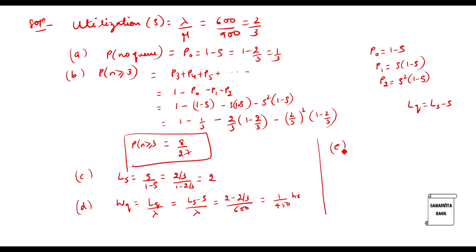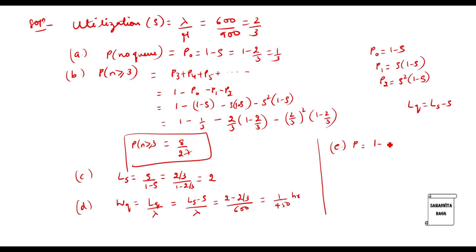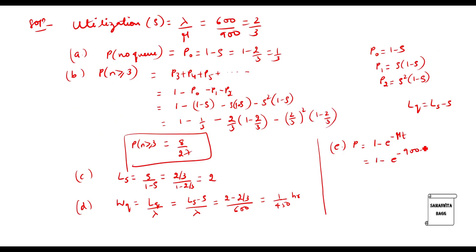The last one is the probability that the customer is served within four minutes. The formula is 1 − e^(−μt). Substituting mu = 900 and t = 4 minutes, we convert t to hours: 4/60 = 1/15 hours. Substituting t = 1/15 into the formula gives an answer of approximately 1. So P(customer served in 4 minutes) ≈ 1.